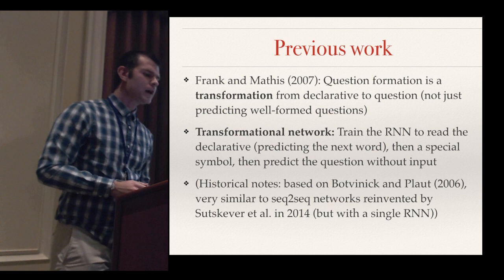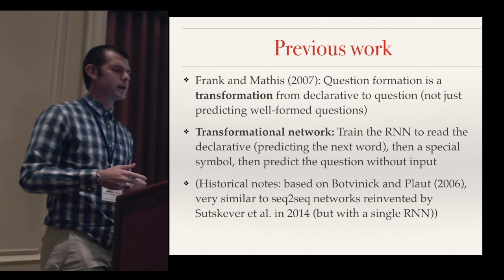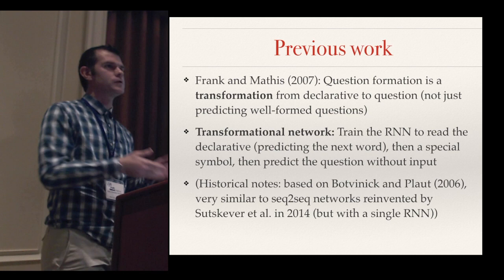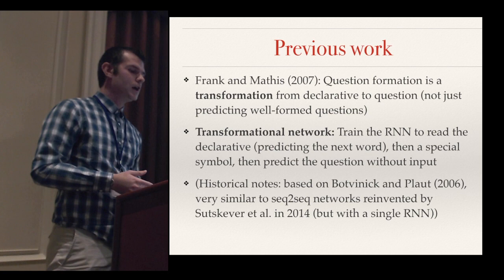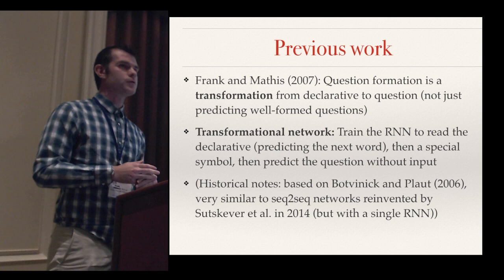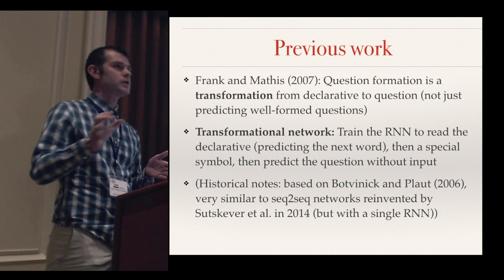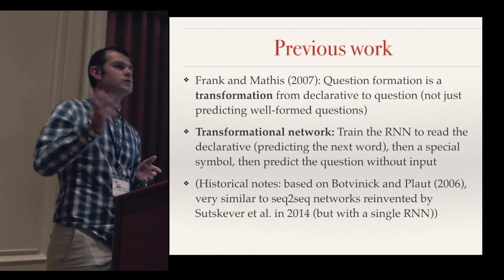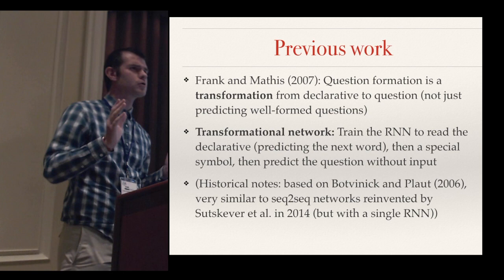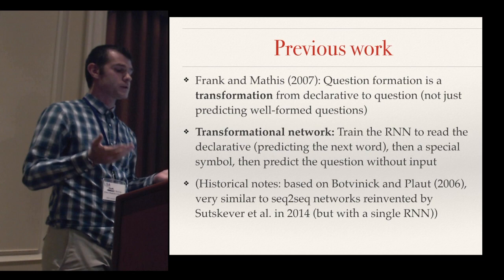In 2007, Bob Frank and Don Mathis pointed out that perhaps we shouldn't be thinking of question formation as predicting well-formedness, but rather as a transformation from a declarative sentence into a question. Frank and Mathis created a network they called a transformational network — a recurrent network trained to take each word of a declarative input sentence one at a time, receive a special token signaling the end of input, and then begin outputting a question one word at a time. As a historical note, this is very similar to modern sequence-to-sequence networks reinvented by Sutskever et al. in 2014.